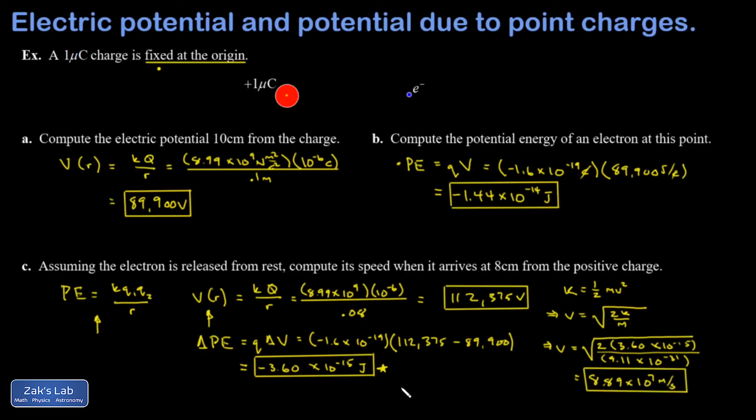So crunching the numbers real quick, this electron is moving about 30% speed of light. So this is definitely in a velocity regime where we should be adjusting by using special relativity. But that's something we'll get back to when we actually focus on special relativity in this course.